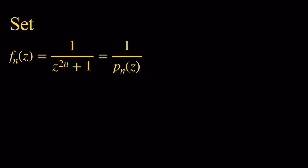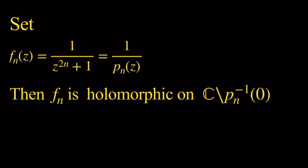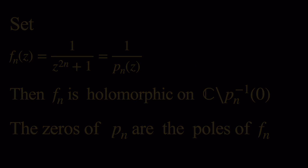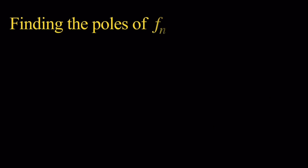We're going to denote by p sub n the polynomial defined by p sub n of z equals z to the 2n plus 1. Obviously, f sub n is a holomorphic function, holomorphic on its domain. The domain is the complex plane without all the zeros of p sub n, and those zeros of p sub n are called the poles of our function f sub n. So we're going to find those poles, because they're going to be useful in order to use the residue theorem.